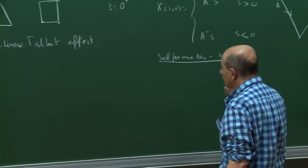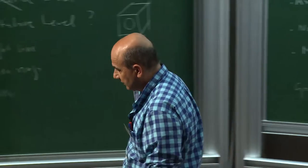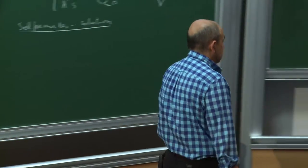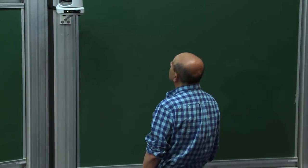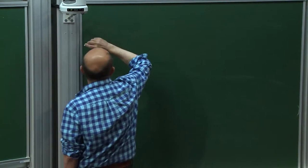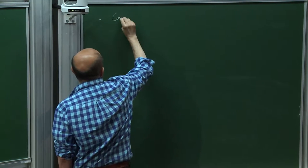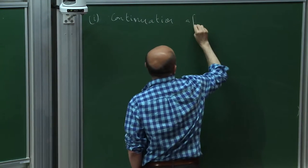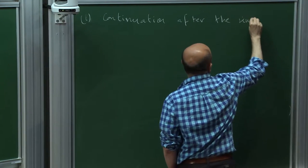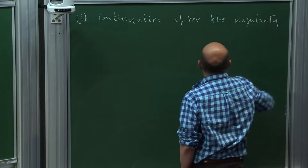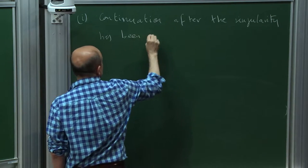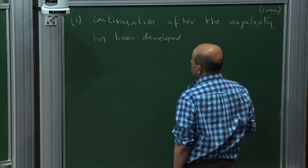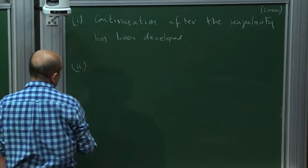We decided to look more carefully at what we could say about self-similar solutions, and in particular I will review something that appeared at the end of 2015. The first question I want to address is: continuation after the singularity has been developed — and here singularity means corner. The second question is about conservation laws. And as Monica said this morning there was this program in Berkeley last fall where weak turbulence appears.